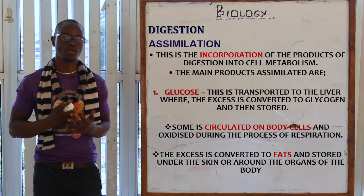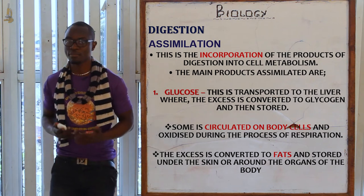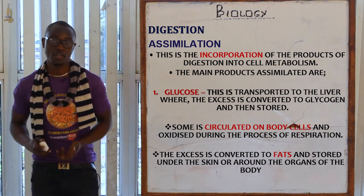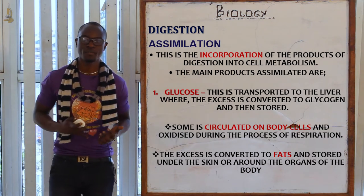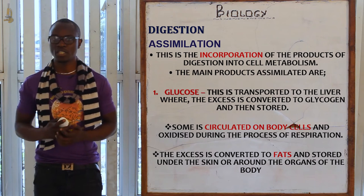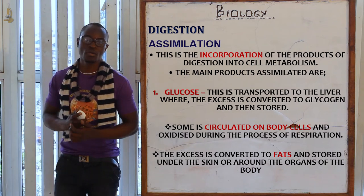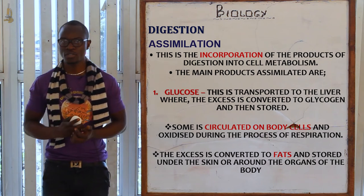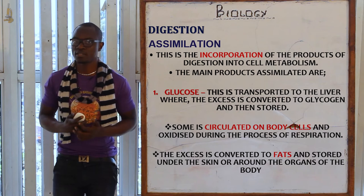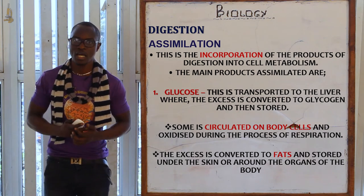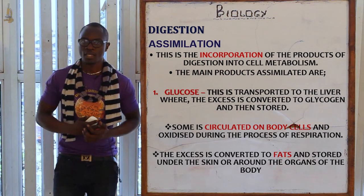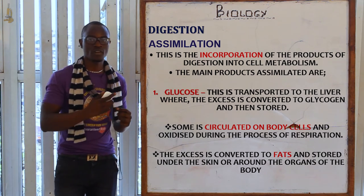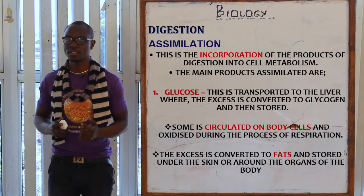Assimilation is the incorporation of the products of digestion into cell metabolism. The products assimilated include glucose, which is transported to the liver where excess is converted to glycogen and stored. As we noted when looking at the ileum, glucose, fructose, and galactose are absorbed into the bloodstream through diffusion and active transport, then taken to the liver.